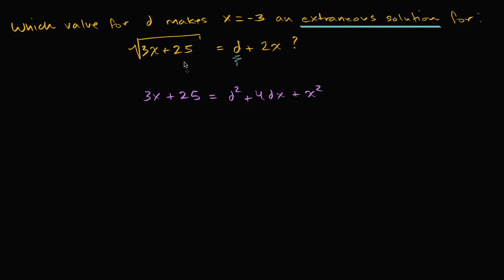That's just squaring both sides. But notice there's actually a different equation that, if you squared both sides, you would also get this. What is that different equation? Well, it's if you took the negative of one of these sides. So if you started with the original equation as negative square root of three x plus 25 equals d plus two x, and squared both sides, you still get this same quadratic — because squaring a negative gives a positive.